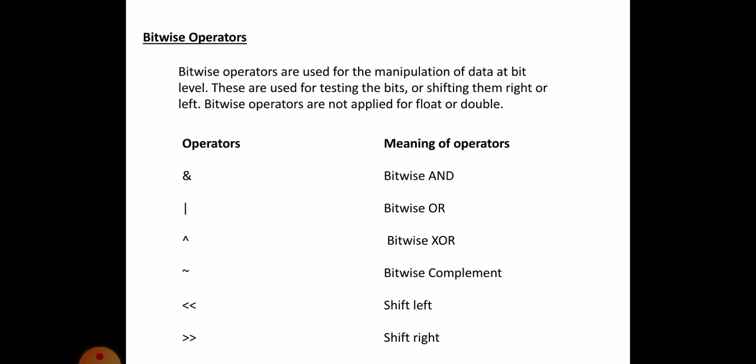Bitwise operators are special operators used for manipulation of data at the bit level. These operators can be used for testing bits or for shifting bits right or left. Bitwise operators cannot be applied to float or double data types — they can only be used with integer types. The bitwise operators used in C include bitwise AND, bitwise OR, bitwise exclusive OR, shift left, and shift right.